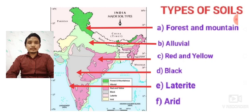Second: alluvial soil. Follow the arrow. Alluvial soil is found mostly in Punjab, Uttar Pradesh, Bihar, and Assam. This alluvial soil is formed and deposited by the depositional work of the rivers Indus, Ganga, and Brahmaputra. Alluvial soil is also found in peninsular India, the eastern coastal plain, and the western coastal plain.